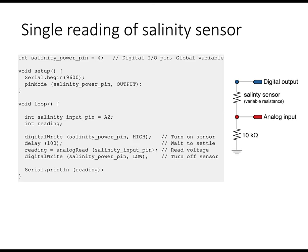Here's the code that would do that. The loop function is where the measurements are made. The setup function configures the power pin, the digital output pin. Inside the loop function, we turn the power on, digital write, salinity power pin high. We wait 100 milliseconds. We make our reading, and then we turn the power pin off, digital write, salinity power pin low.